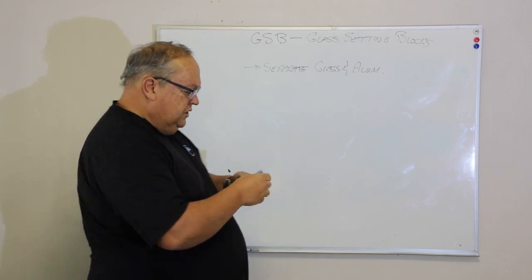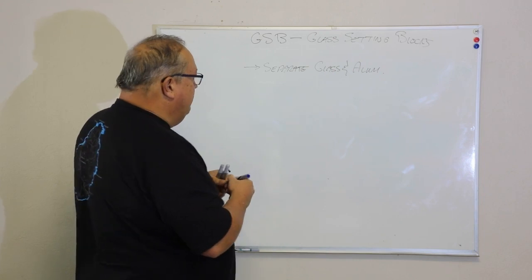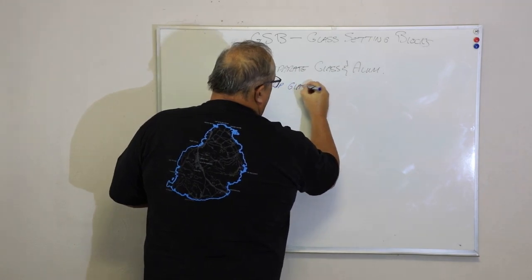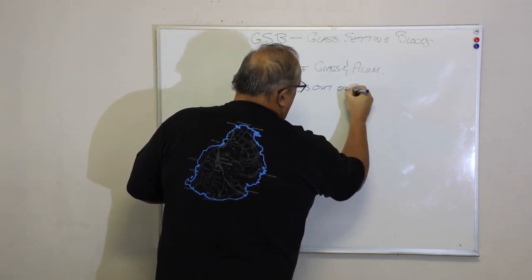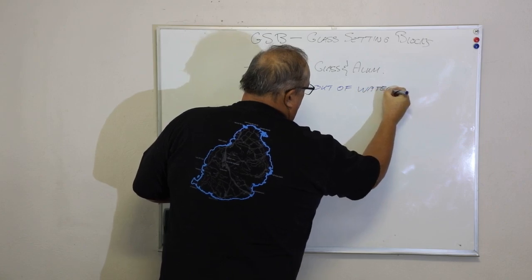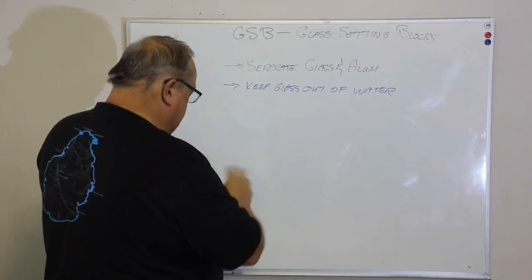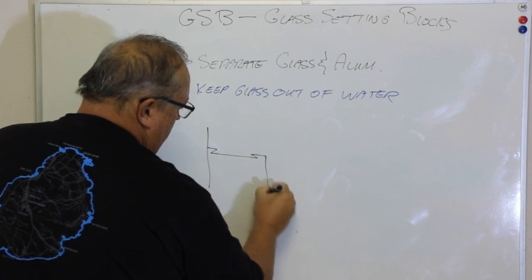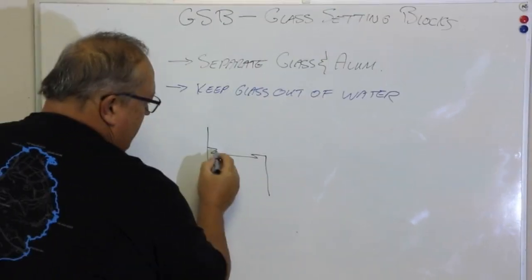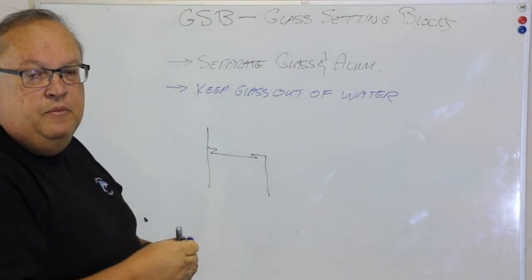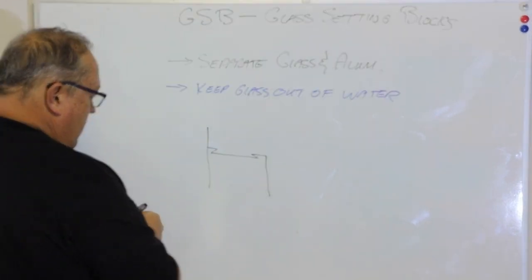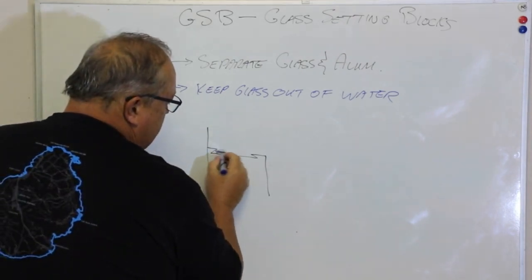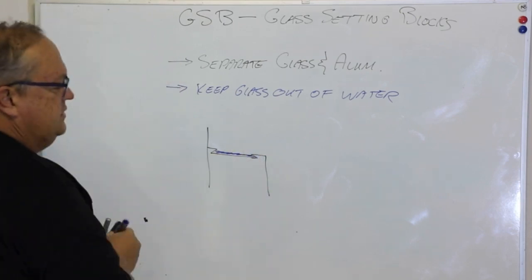The second function is to keep the glass away from water. So if I have a typical aluminum profile, let's just have a look at, for example, an outer frame, and that outer frame would typically have a glazing rebate with the glazing clips in. When that window gets wet, you can have a situation that water can sit in that glazing rebate.